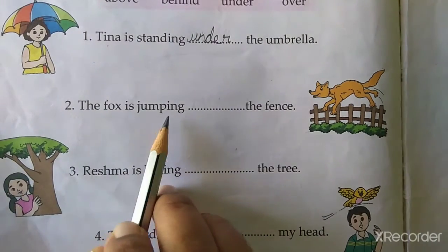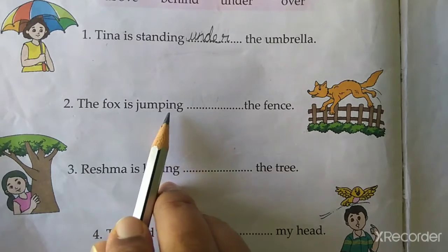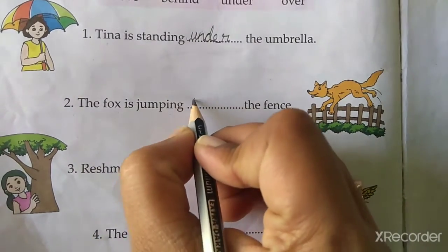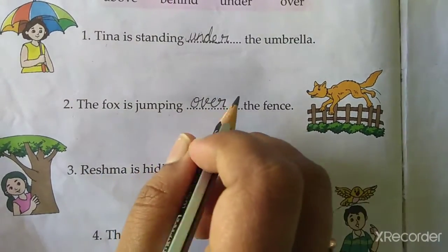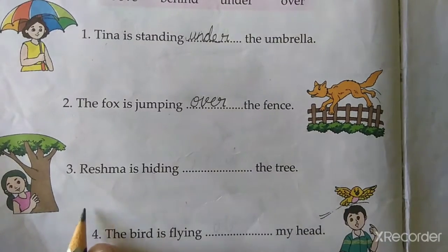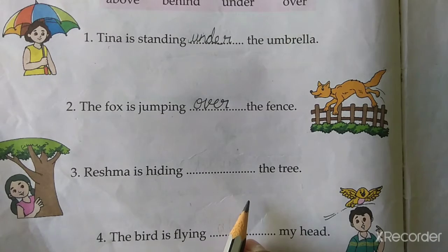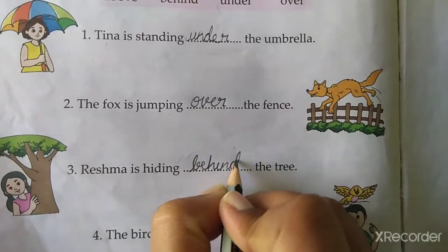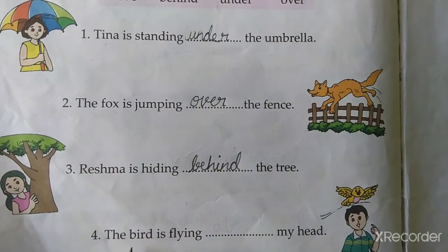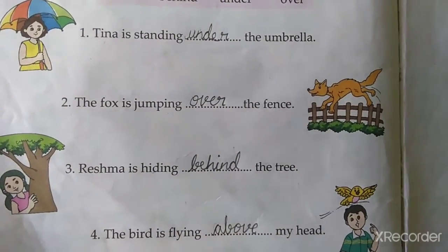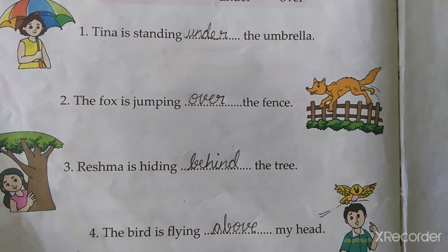The next one: the fox is jumping ___ the fence. The fox is jumping over the fence. Next: Reshma is hiding ___ the tree. Where is Reshma hiding? She is hiding behind the tree. The next one: the bird is flying ___ my head. The bird is flying above my head.